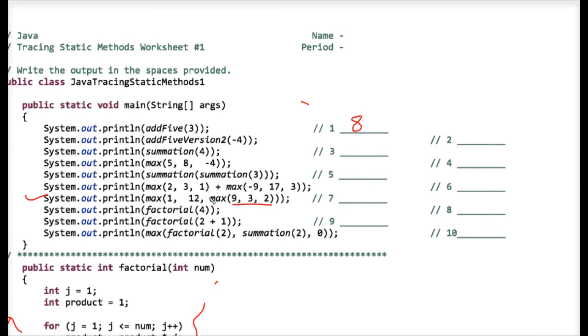So very carefully, you might want to line this out and treat that as a 9. But 9 is now the third parameter of an outer call statement where max with the parameters 1, 12, and 9 are all passed down to that same reusable method.